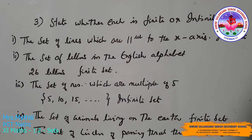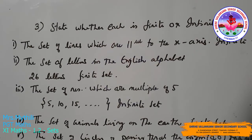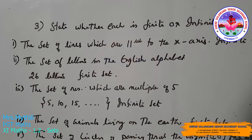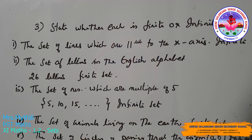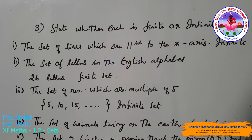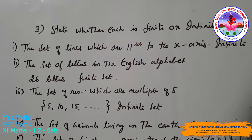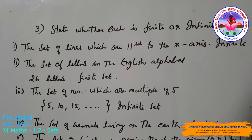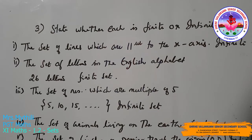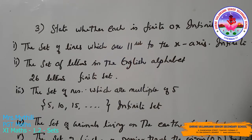Question 3: state whether each of the following sets is finite or infinite. First: the set of lines parallel to the x-axis. We can draw infinite lines parallel to the x-axis, so it is an infinite set. Second: the set of letters in the English alphabet. There are 26 letters in the English alphabet, so it is a finite set.